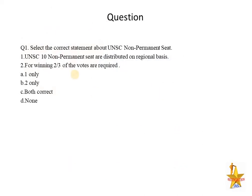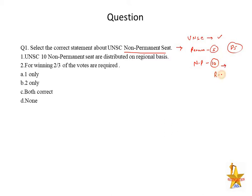The first question is related to the United Nations Security Council non-permanent seat. Key points to know: UNSC has permanent seats held by P5 nations, which are also nuclear-powered. Besides these, there are non-permanent seats, which have been gradually expanded. Non-permanent seats are allocated on a regional basis — North America, South America, Australia, Africa, and Eurasia — with seats distributed region-wise. A two-thirds vote of the General Assembly is required for election.